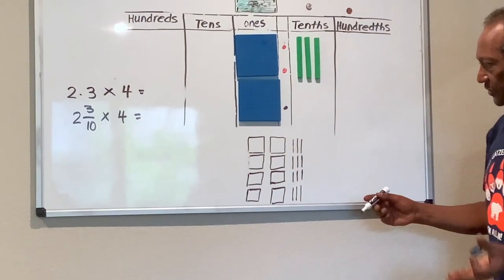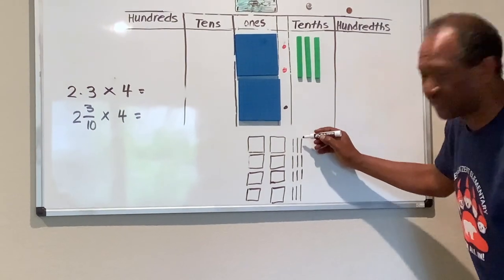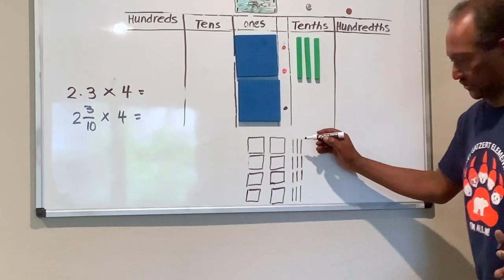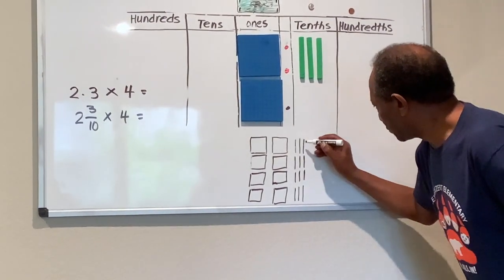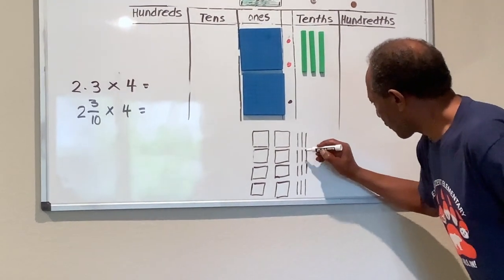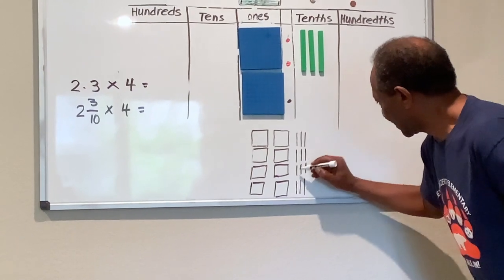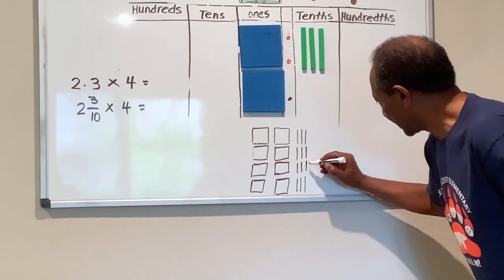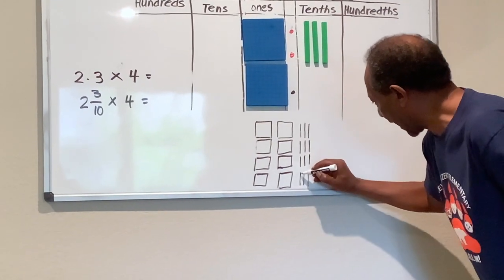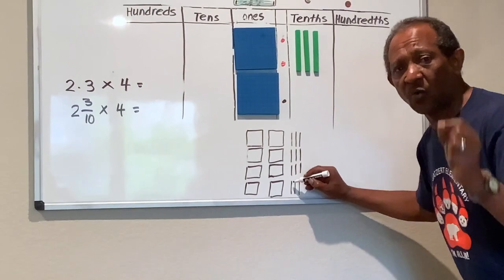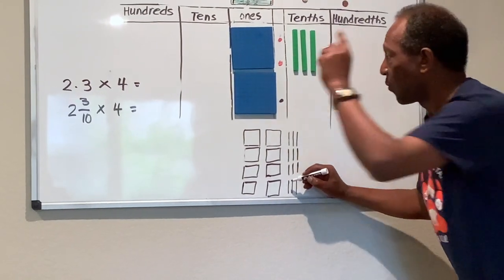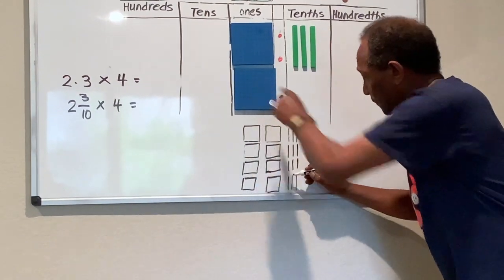Now let's count the tens first: one, two, three, four, five, six, seven, eight, nine, ten. Ten tens equals one whole. So I'm going to regroup the tens.